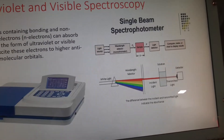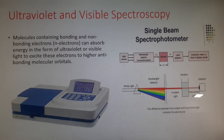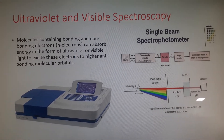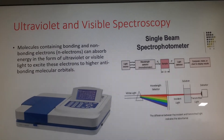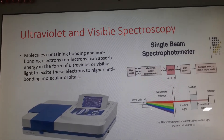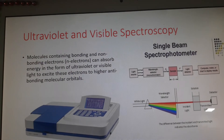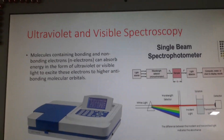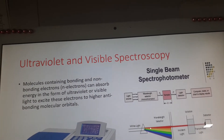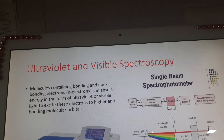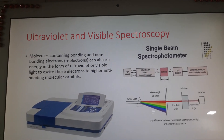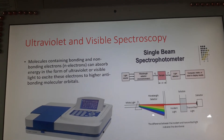The second instrument is ultraviolet and visible spectroscopy. In UV-visible spectroscopy, molecules containing bonding and non-bonding electrons can absorb energy in the form of ultraviolet or visible light to excite these electrons to higher anti-bonding molecular orbitals. This technique analyzes compounds using electromagnetic radiation in the spectrum from 10 nanometers to 750 nanometers. An important feature is that the atom must be in the gaseous state.